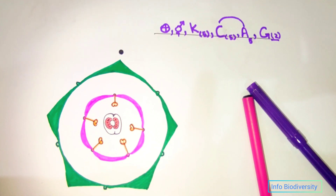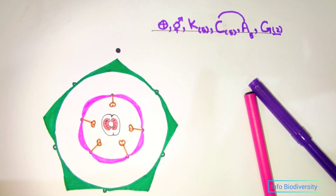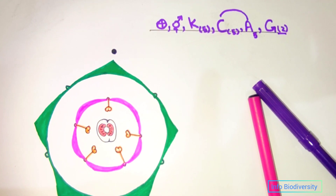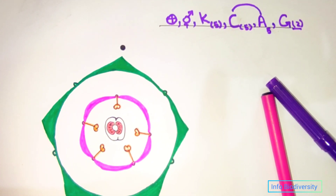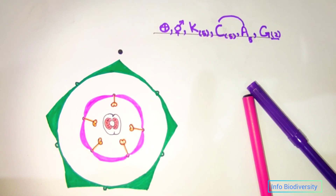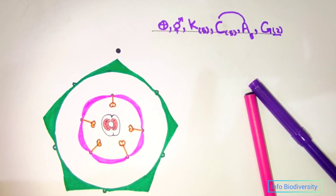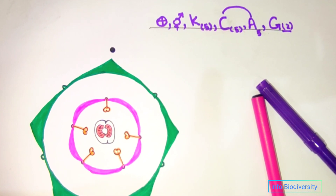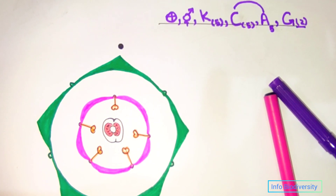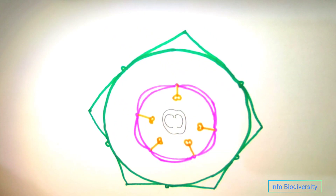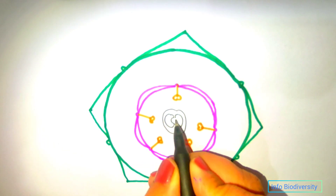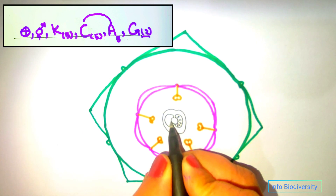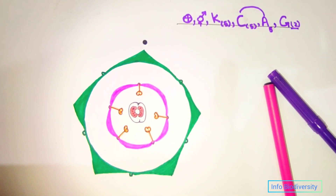To summarize the floral formula of family Solanaceae: actinomorphic represented by circle and plus, bisexual represented by arrow and plus, K5 united, C5 united, A5 free and epipetalous, G represented by two carpels, syncarpous, and superior ovary. In this video I gave you a brief and simple way for learning the floral formula and floral diagram of family Solanaceae.